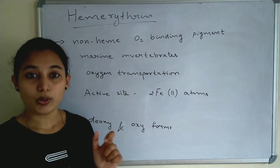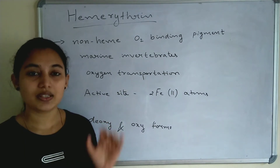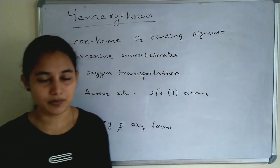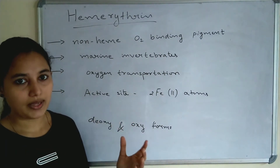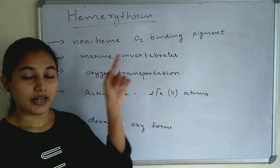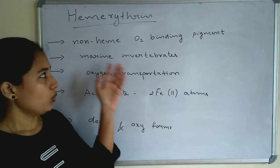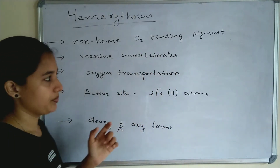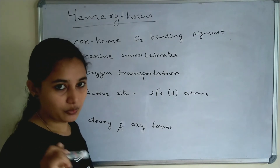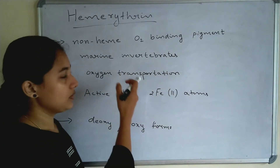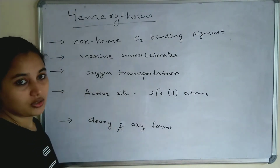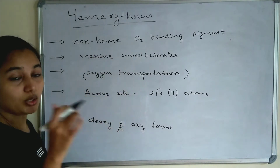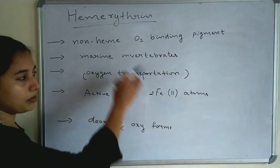Hemerythrin is a non-heme oxygen binding pigment. Non-heme means it doesn't contain a heme group. The heme group is a porphyrin ring which contains iron as a central metal atom — a 4-pyrrole ring connected through a methane bridge. Hemerythrin doesn't contain a heme group; it is a non-heme protein which binds O2 (dioxygen). It is seen in marine invertebrates, and its main function is oxygen transportation.